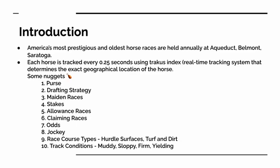America's most prestigious and oldest horse races are held annually at Aqueduct, Belmont, and Saratoga. A real-time tracking chip is fastened on the saddle of the horse and stores the geographical coordinates every 0.25 seconds. Here are some commonly used terms in the racing world. Purse refers to the total amount of money paid out to the owners of the horses racing at a particular track.